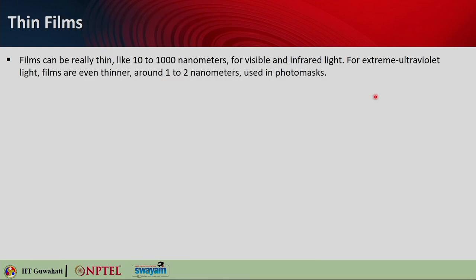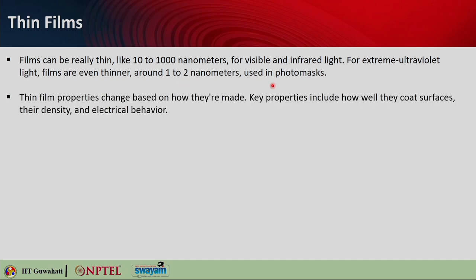As mentioned earlier, these thin films can be really very thin — from 10 to 1000 nanometers. Typically 10 nanometers to 1 micron is what we call thin films. These are for visible and infrared light. For extreme UV light, the films will become even thinner because extreme UV has a very short wavelength. In that case, you can actually use thin films of 1 to 2 nanometer thickness, which are typically used in photo masks. We will discuss these new terms soon in this lecture or in the subsequent lectures.